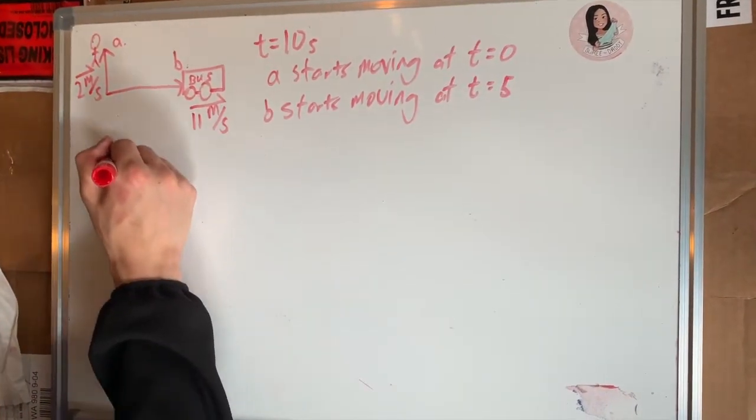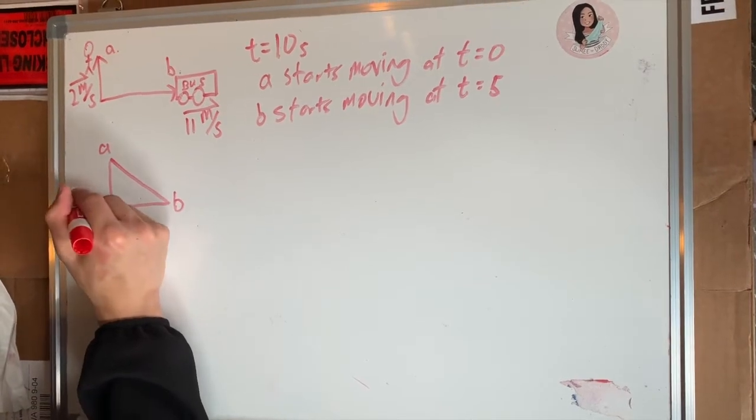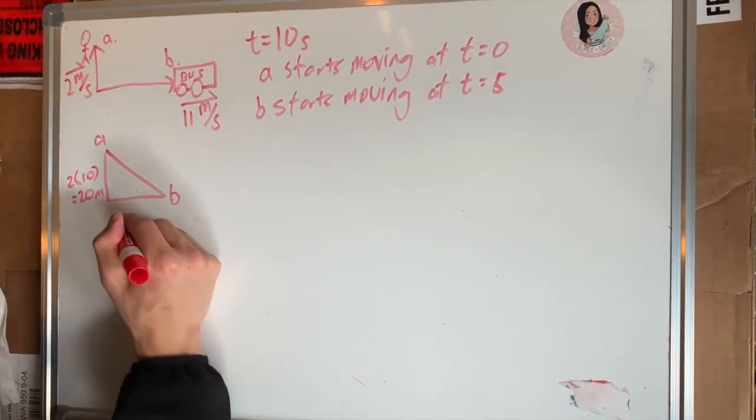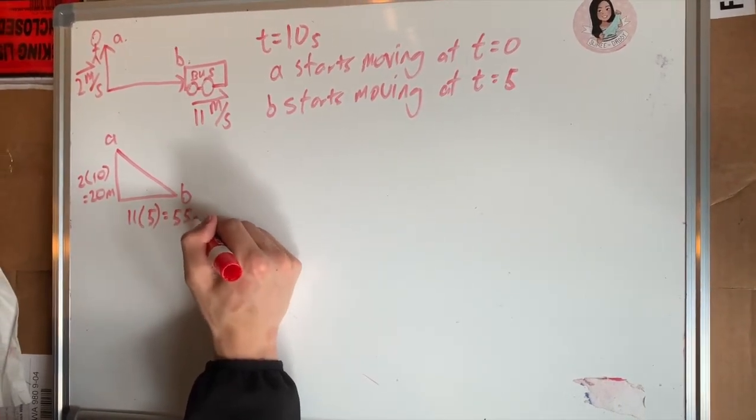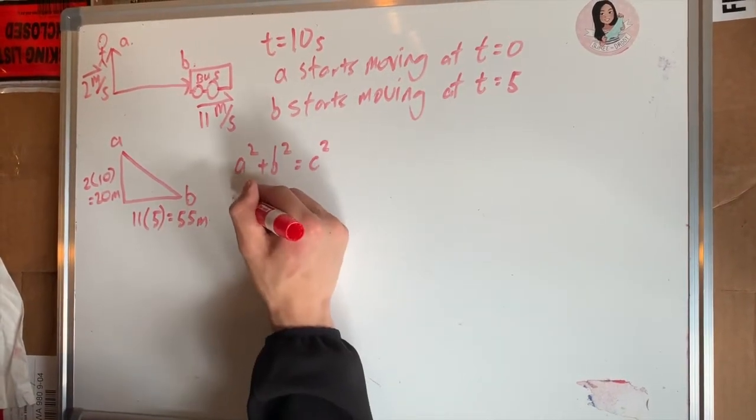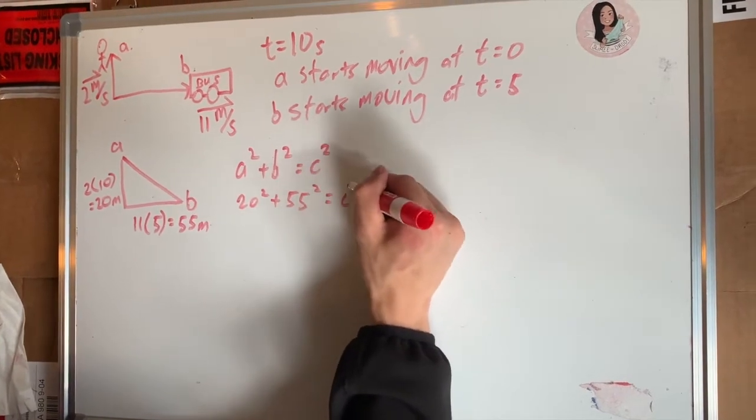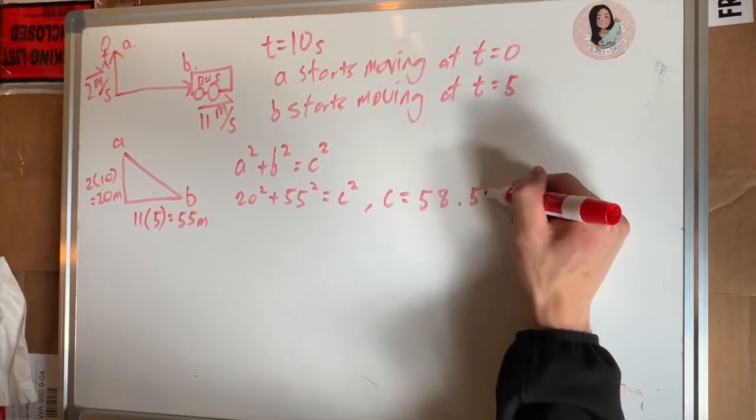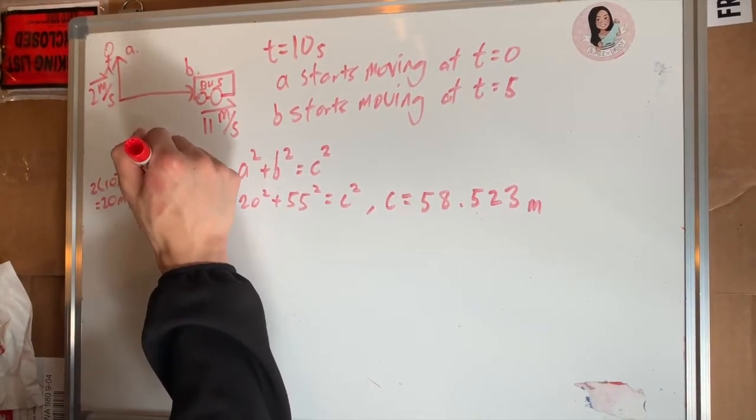We can create a triangle with our positions, and the length of side a can be found by taking my speed 2 times the time that I've moved, which is 10 seconds, and that gives us 20 meters. The length of side b can be found by taking the speed of the bus, 11 times 5, which is 55 meters. Using a squared plus b squared equals c squared, we can plug in 20 meters squared plus 55 meters squared equals c squared. Solving for c, we get c equals 58.523 meters.